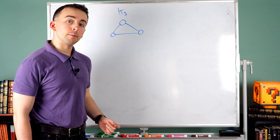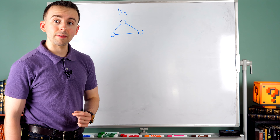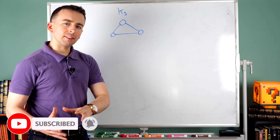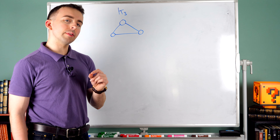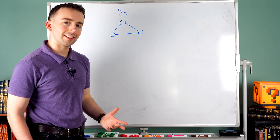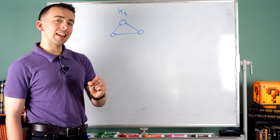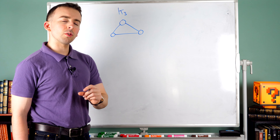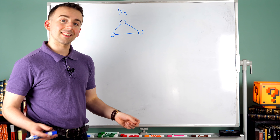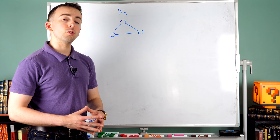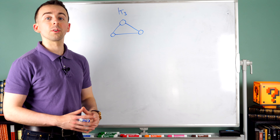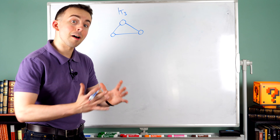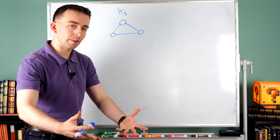Here is a graph. It happens to be the complete graph on three vertices, which we call k3. In a previous lesson we introduced vertex covers — I'll leave a link in the description to that lesson. Recall that a vertex cover is a set of vertices so that every edge in the graph is incident with at least one vertex in the cover. The cover is said to cover all edges of the graph. If it's a vertex cover, it's made up of vertices and it's covering edges.